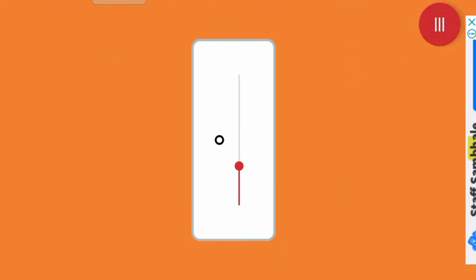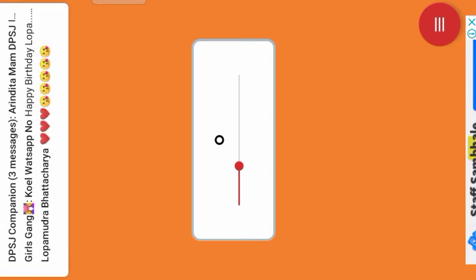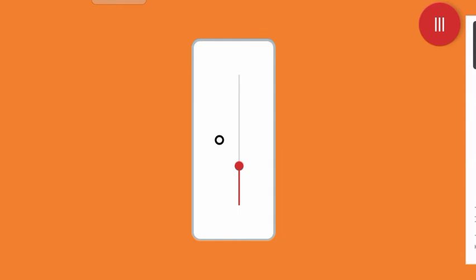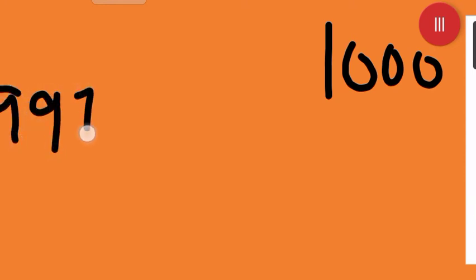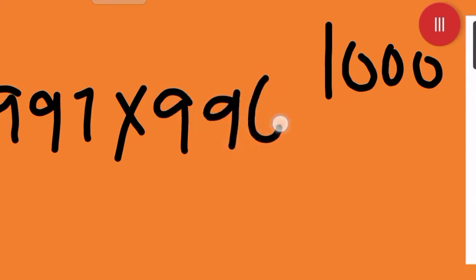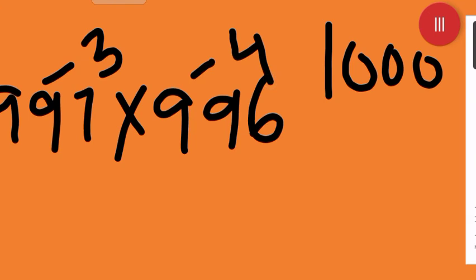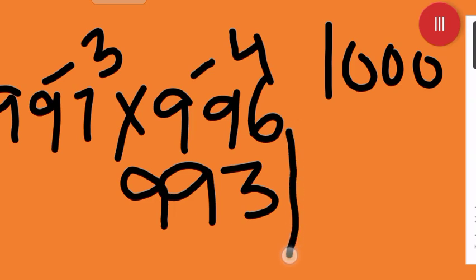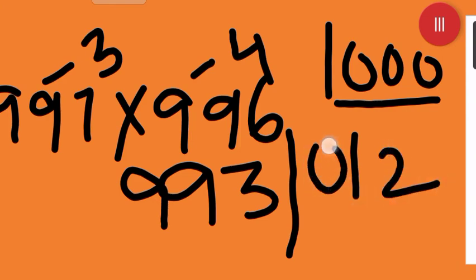Now come to page 36. Same pattern, but the base is 1000. For 997 × 996: write 997 as minus 3 and 996 as minus 4. Then 997 minus 4 or 996 minus 3 both give 993. Now balancing: 3 × 4 = 12. Base is 1000, so you need three digits on the right. 12 is only two digits, so prefix one zero. Your answer is 993012.